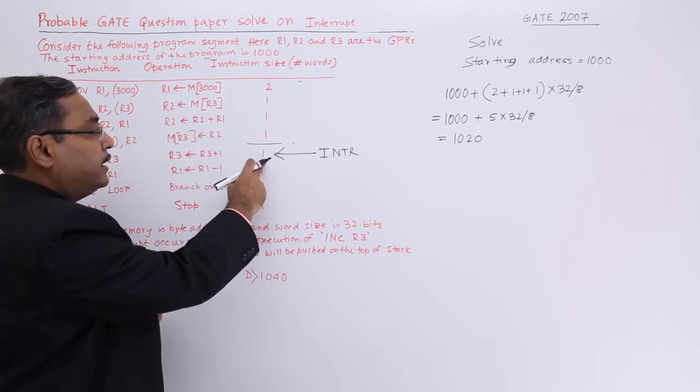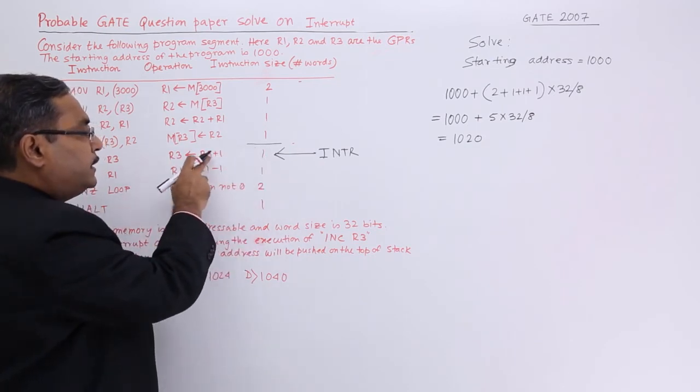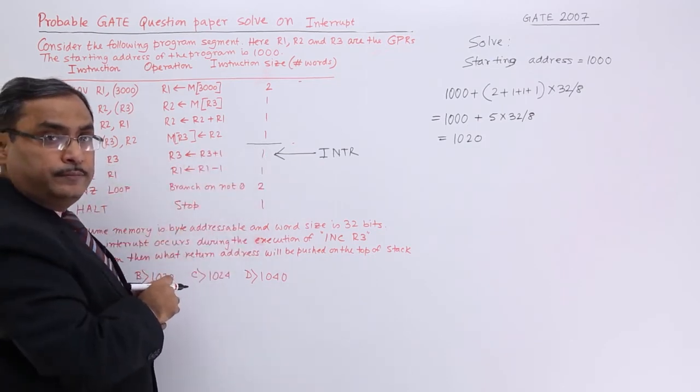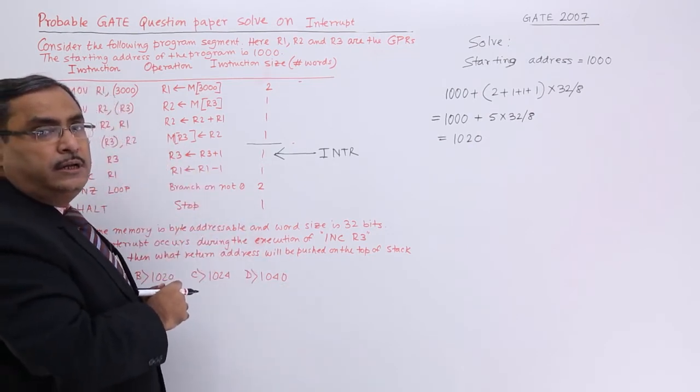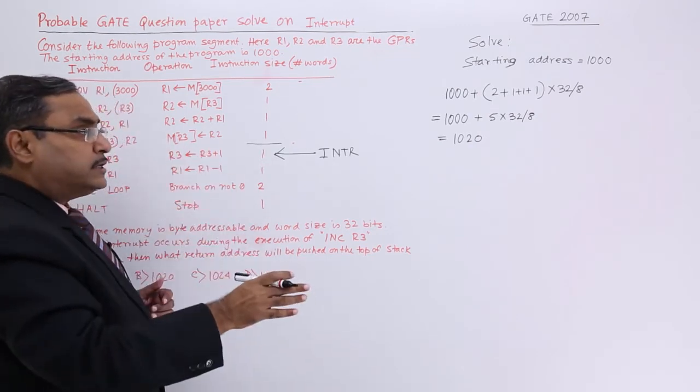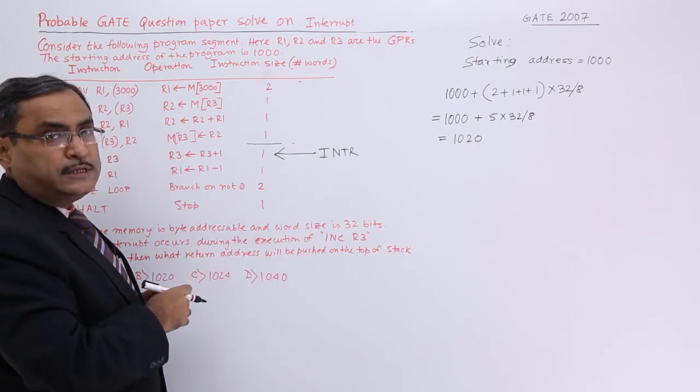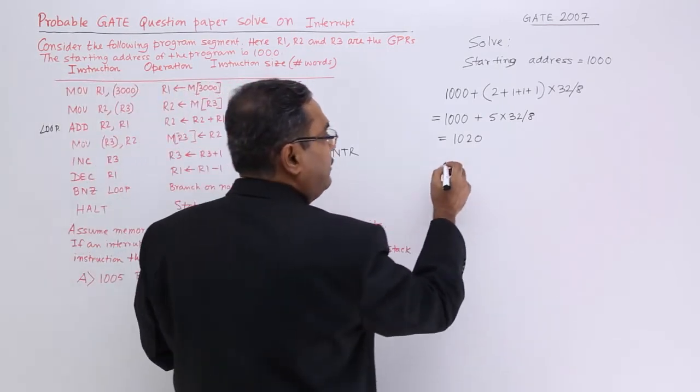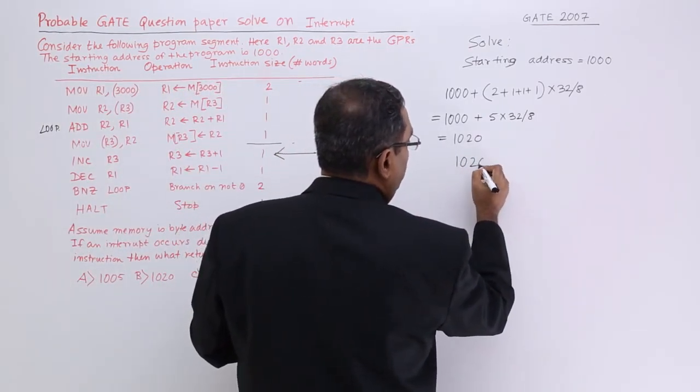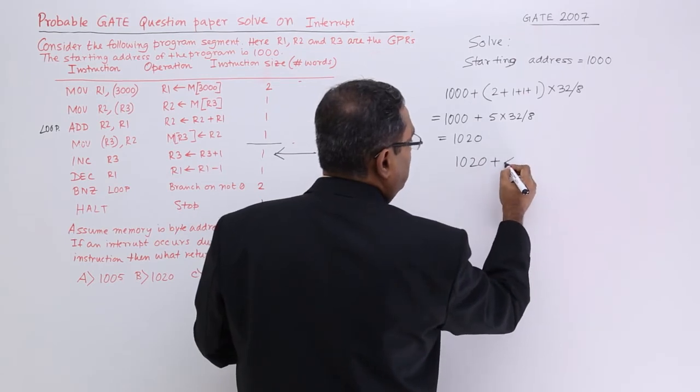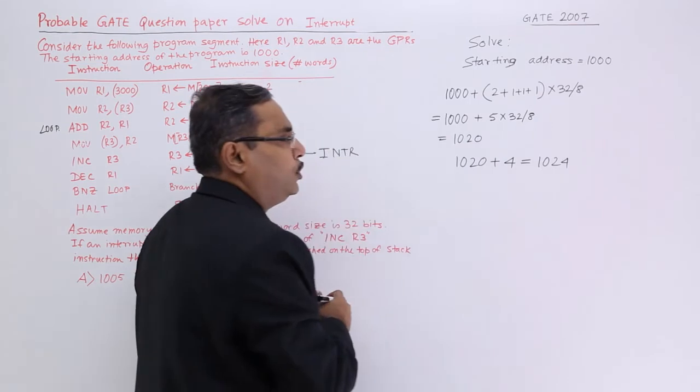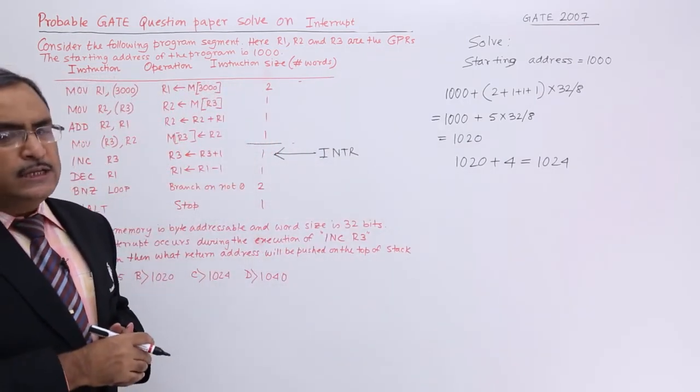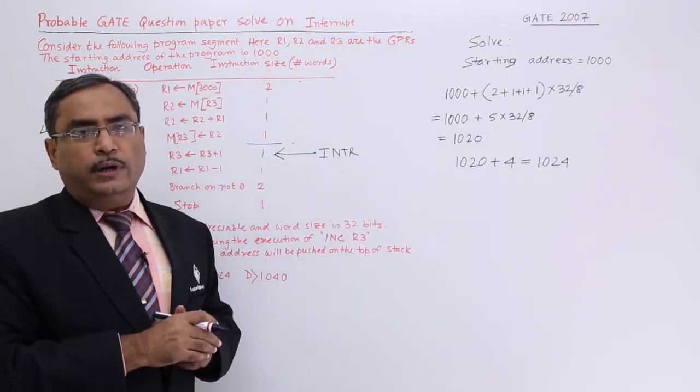Now see that is up to this and this instruction is also having another one word. Because interrupt will get generated when this instruction is executing. But the thing is that after completion of that instruction then the next instruction address will be pushed on the top of the stack. So the address whatever is going to be pushed will be this plus 1 word that means 4 bytes is equal to 1024 will be pushed on the top of the stack.